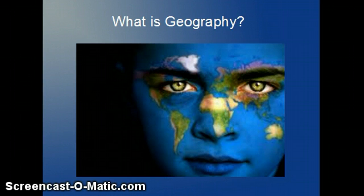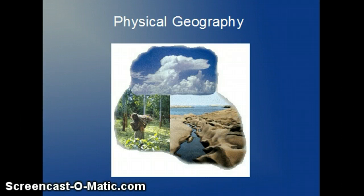Geography is broken down into two main branches, physical geography and human geography. Let's first look at physical geography. Physical geography is one of the main branches of geography. It involves the study of Earth's natural features, including water, landforms, vegetation, and climate.